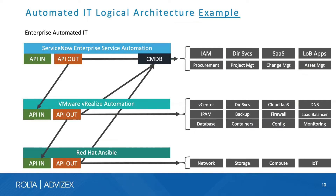An example of the logical architecture would be ServiceNow as the enterprise automation platform, driving things like procurement, project management, change management, and asset management. VMware vRealize Automation Platform enables infrastructure services automation, driving IP address management, database, containers, firewall configurations, and other infrastructure aspects. On the bottom layer, Red Hat Ansible is used to deploy and configure network storage, compute, and even IoT devices.